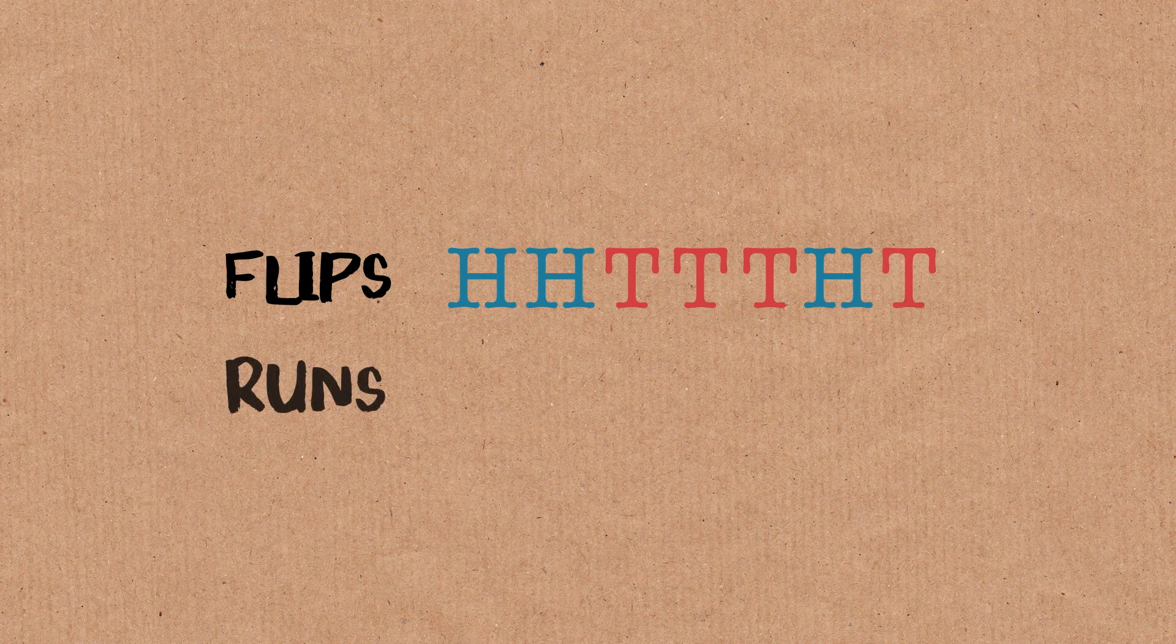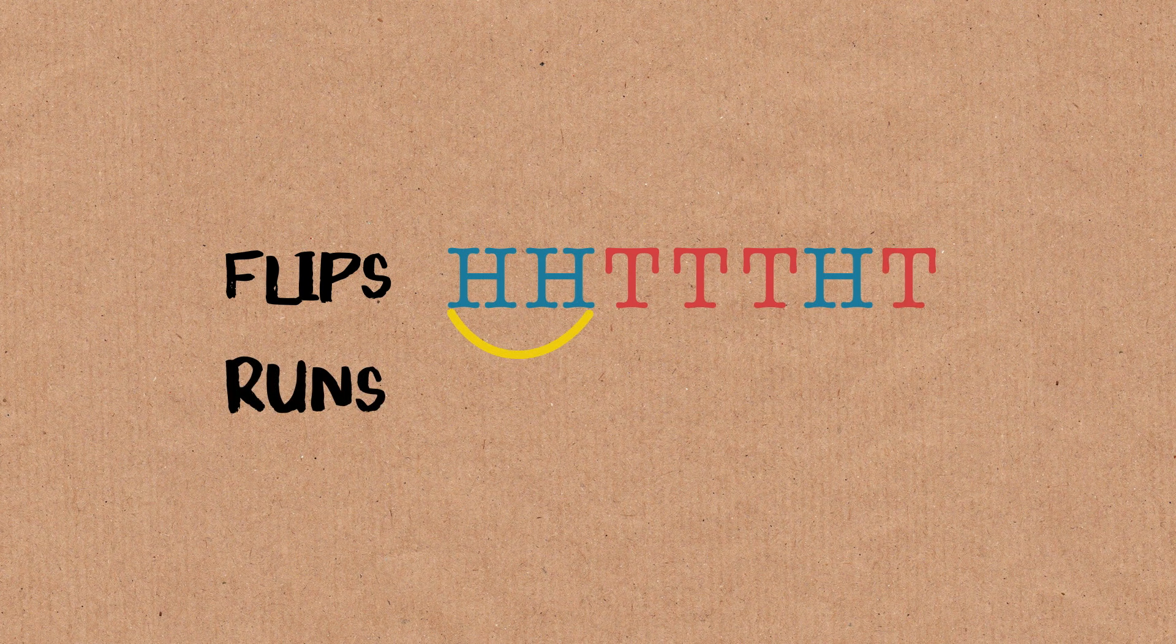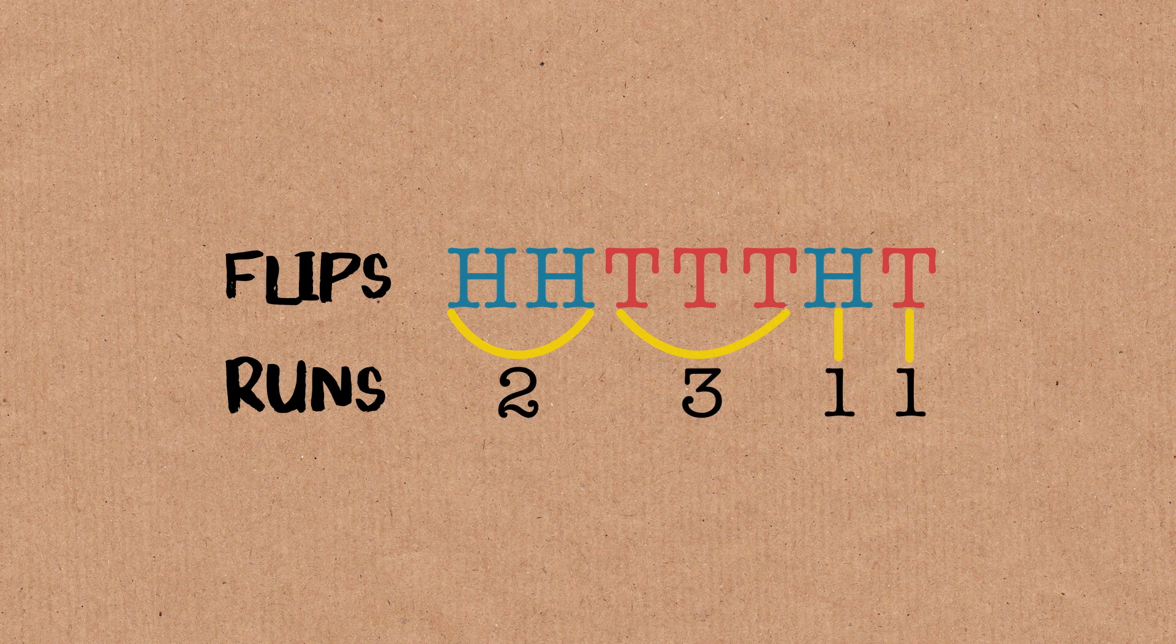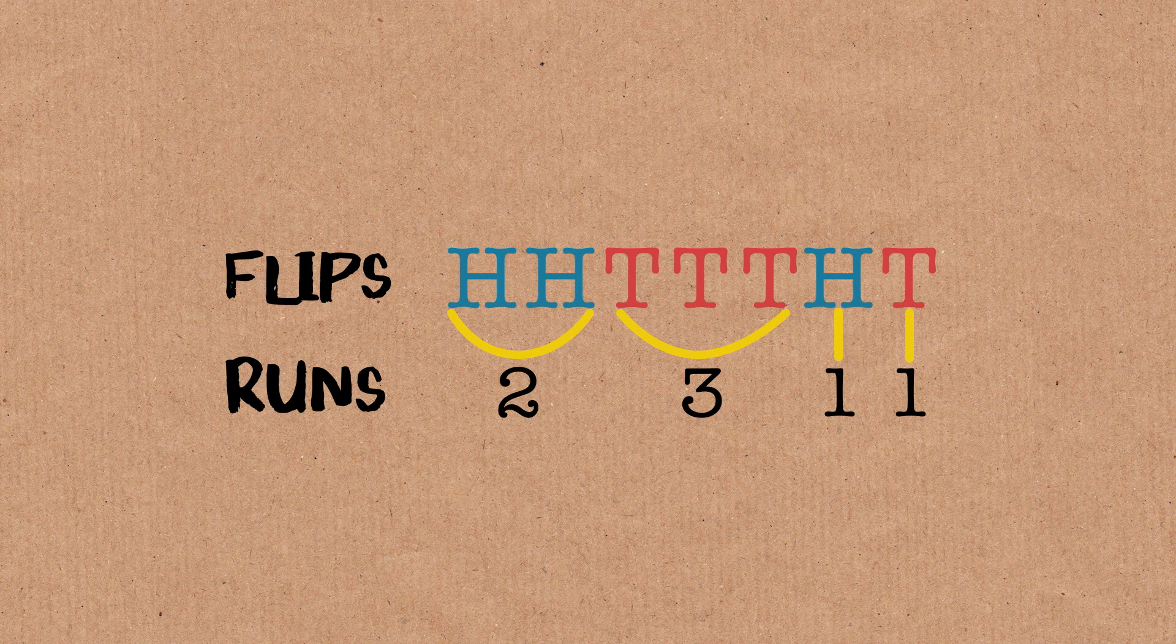You look at the runs. Here we've got a run of two heads, so we get a two. We write down the length of the runs: three, one, one. So the runs transformation of a string, a sequence, is the lengths of the runs. That's the runs transformation.